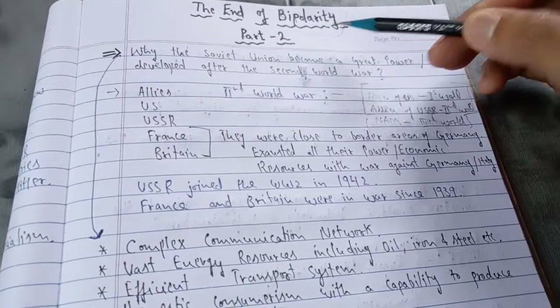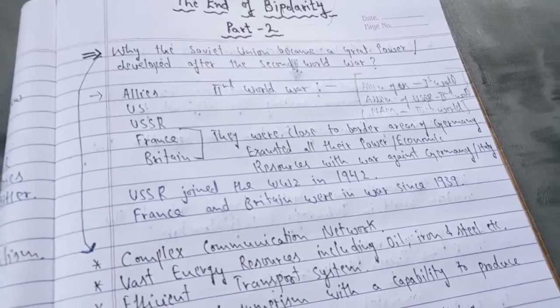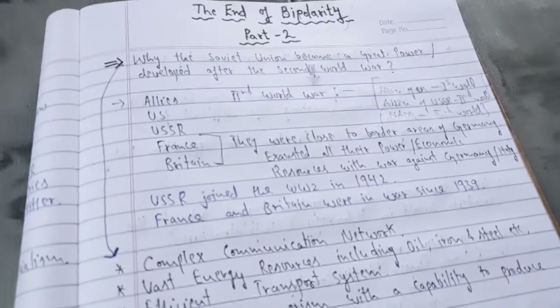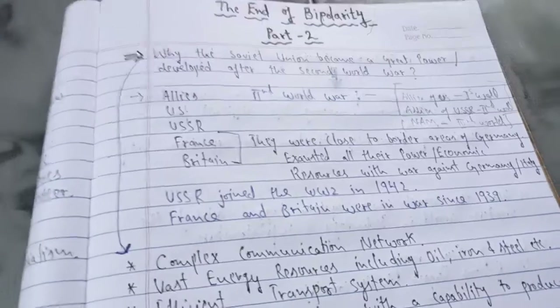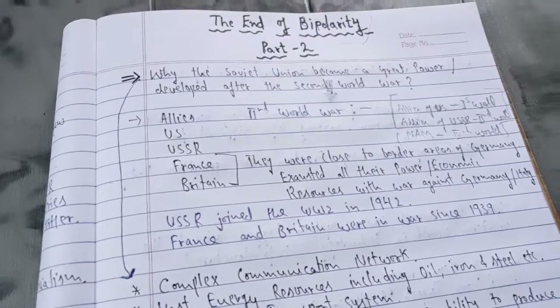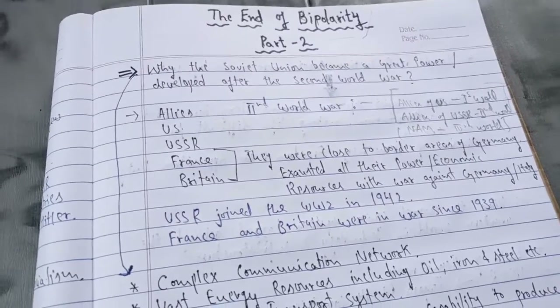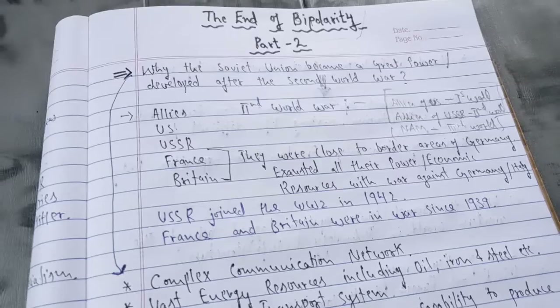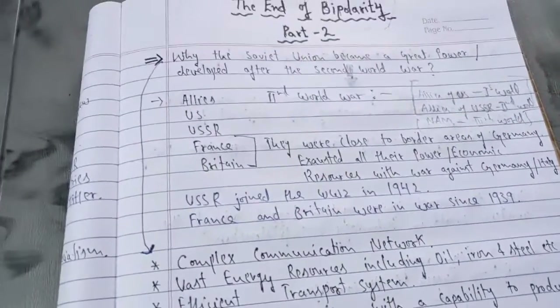In the last video I told you that the Russian Revolution of 1917 led to the formation of the USSR, and this revolution was inspired by the idea of socialism as opposed to capitalism. We also studied the ideology of the USSR, which is communism. Communism and socialism are one and the same thing, and this ideology was opposed to capitalism.